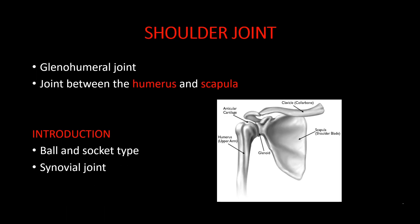The shoulder joint is called the glenohumeral joint. The joint is made between the humerus and the scapula. Specifically, it is formed between the head of the humerus and the glenoid cavity of the scapula, which is why it is called the glenohumeral joint.